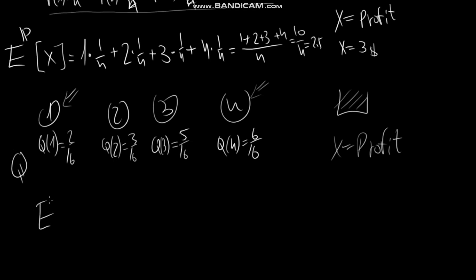Now we want to calculate our expected profit, but now with respect to this new probability. This is why I denote it by the expectation under the Q probability of X. This is the difference between the expectation under P and the expectation under Q.